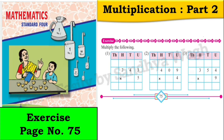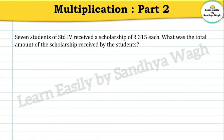Seven students of standard 4 received a scholarship of 315 rupees each. What was the total amount of the scholarship received by the students? Fourth standard madhi seven mula na prate ki 315 rupees chi scholarship milali ahi. Mag sagraya mula na ekun kiti scholarship milali? To solve this, we need to multiply 315 by 7.